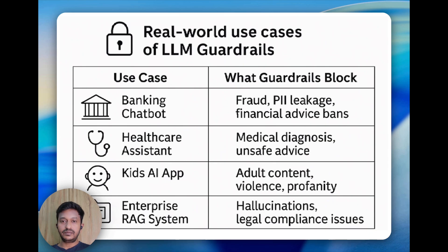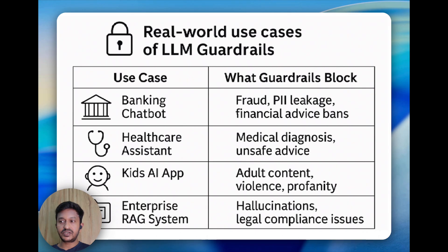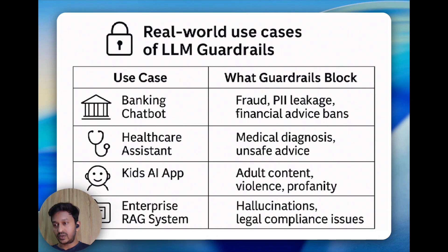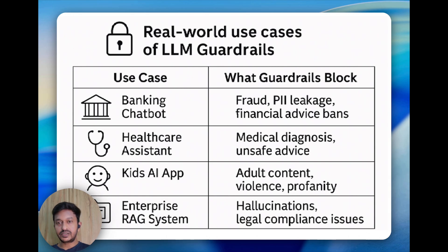Here are some real-world use cases of LLM guardrails. For a banking chatbot, it should block fraud, personal information leakage like email IDs, and financial advice or claims. For a healthcare assistant, it should block medical diagnoses, unsafe advice, and any personal patient information. For a kids' AI app, it should block adult content, violence, and profanity. For enterprise RAG systems, it should reduce hallucinations and legal compliance issues. These are simple examples, but there are many more scenarios.